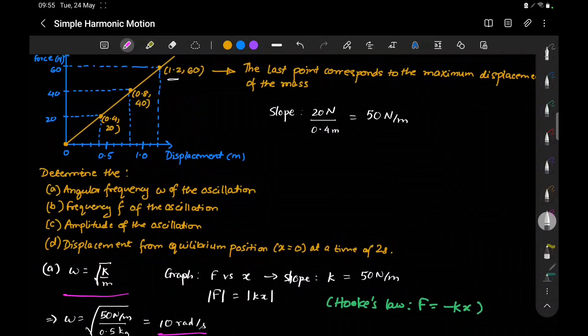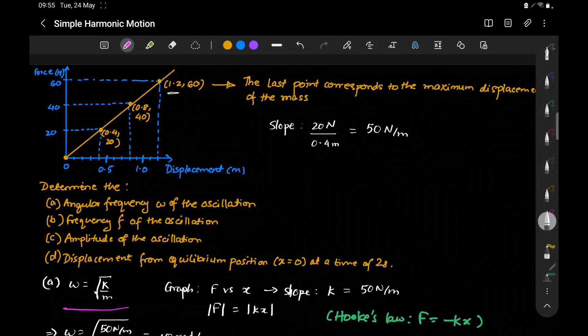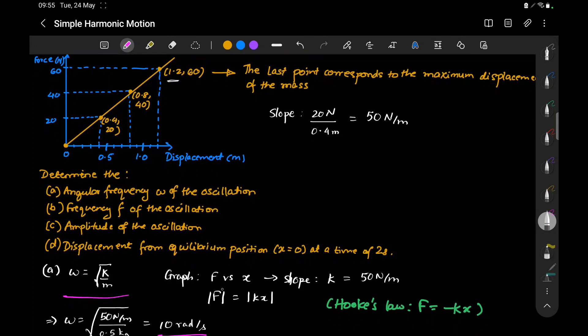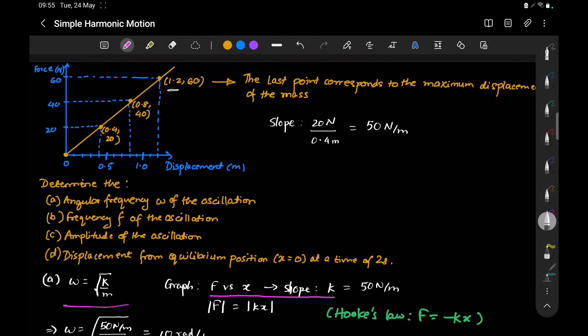We have solved this question. The key takeaway: the slope of a force versus displacement graph gives the spring constant k.